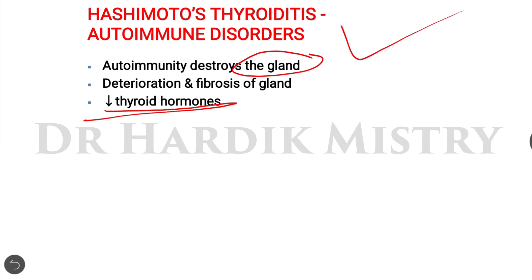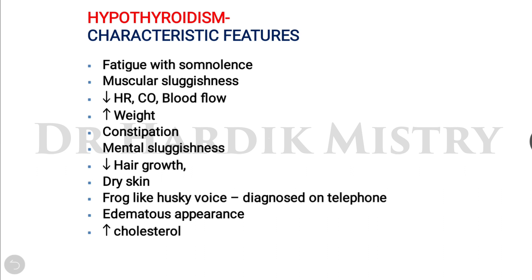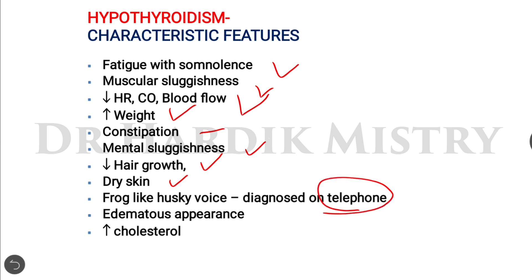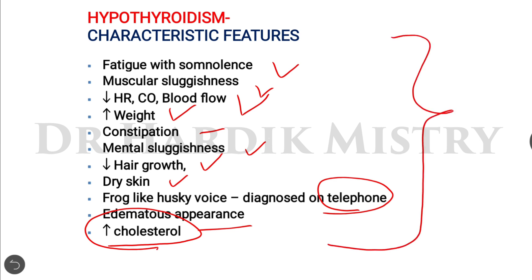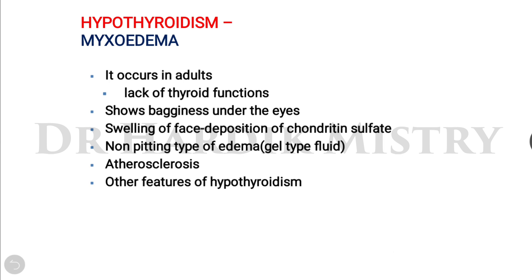Clinical features of hypothyroidism include: fatigue with somnolence, muscular sluggishness, decreased heart rate, cardiac output and blood flow, increased body weight, constipation, mental sluggishness, decreased hair growth, dry skin, a frog-like husky voice detectable on telephone, edematous appearance, and increased cholesterol level.